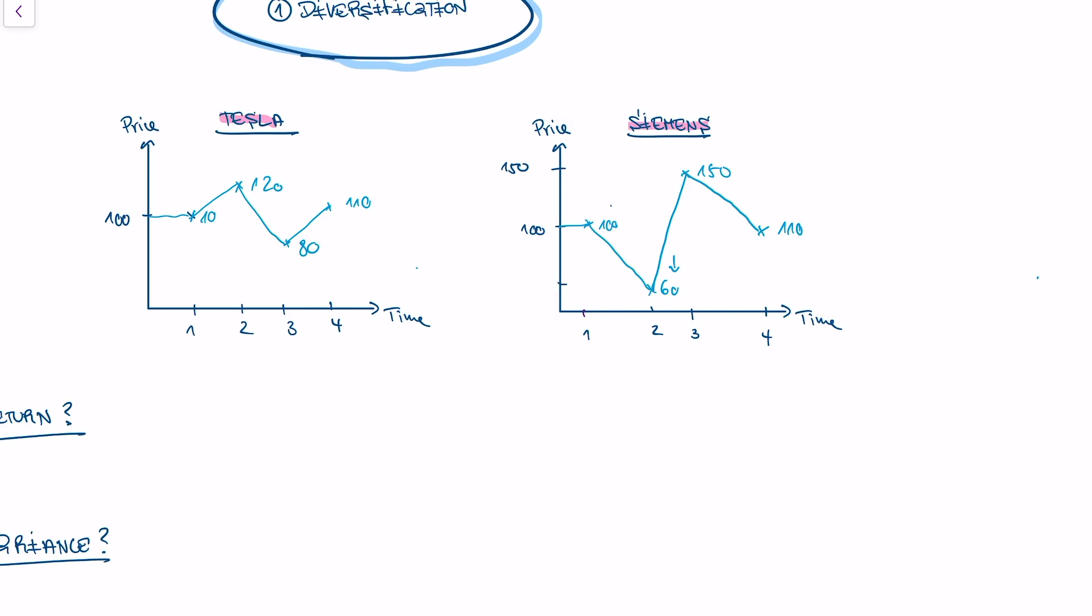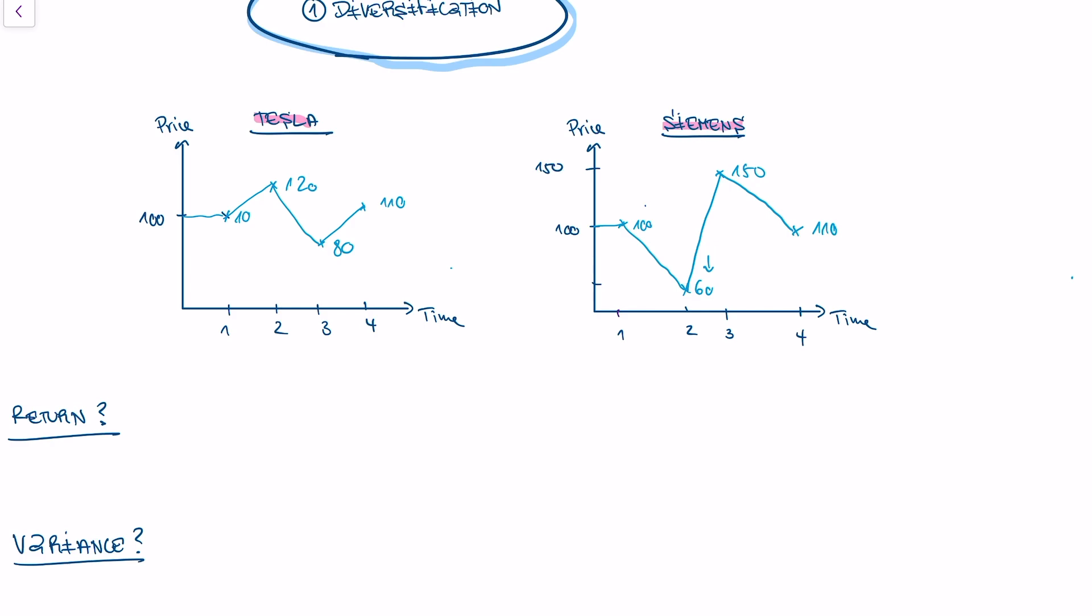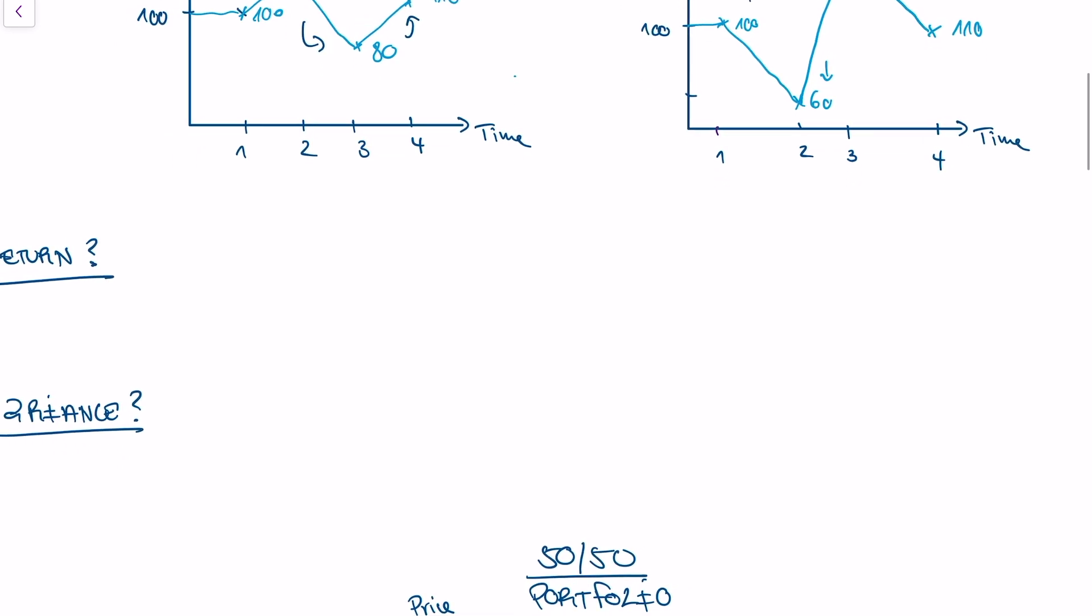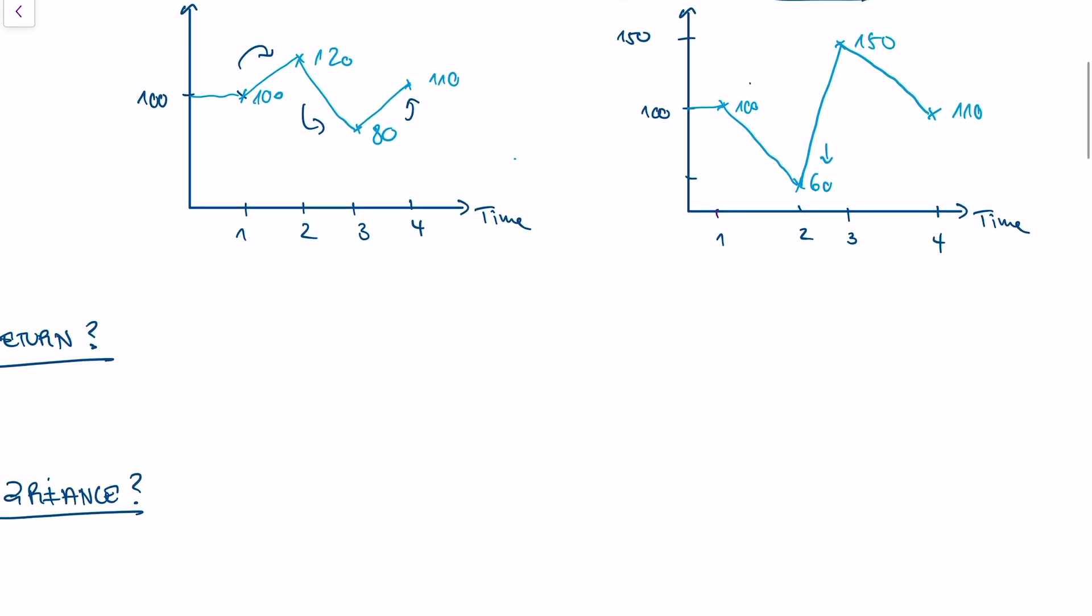So let's now calculate what the average return is for Tesla and what the average return is for Siemens. So I want to understand the average return over our time series. And for Tesla, we jump once from 100 to 120, from 120 to 80, and from 80 to 110. So in order to calculate the average return, all I do is I take my jumps.